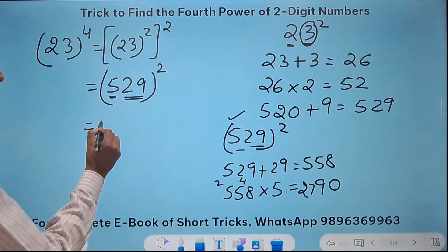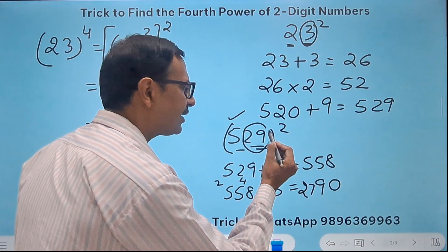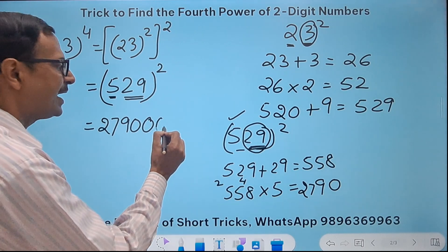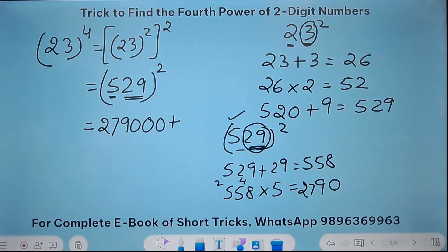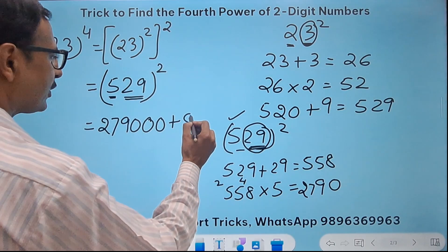Now what happens to 2790? 2790. How many digits I took here? Two digits. So I will put two zeros and add the square of 29 that is 841 to the result.